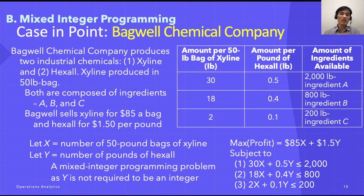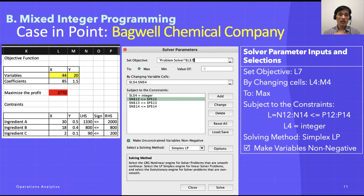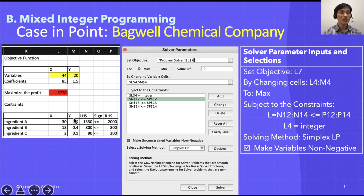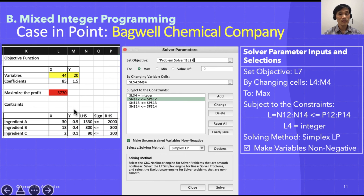We can solve this using Excel Solver. The setup has variables with values including 44, 20, 85, 1, and 1.5. After entering the ingredient A, B, and C constraints with X and Y coefficients, left-hand side, right-hand side, and signs, I ran the integer programming and was able to get a maximum profit of $3,770.